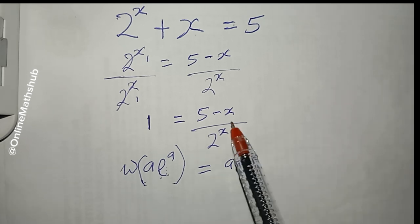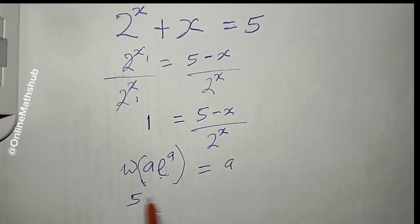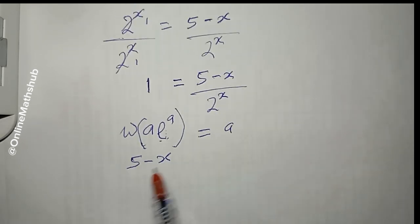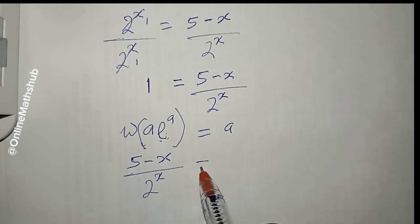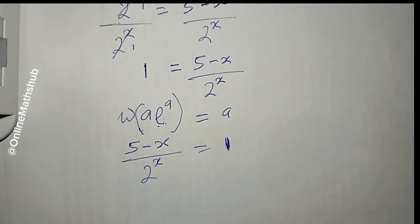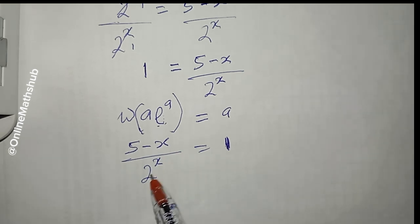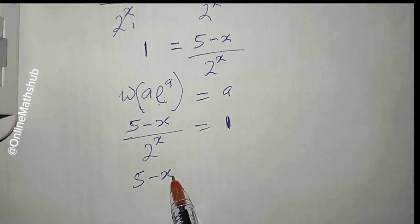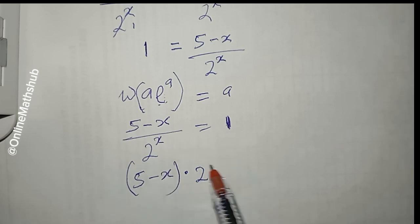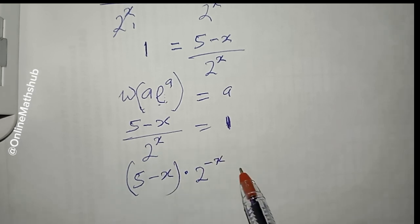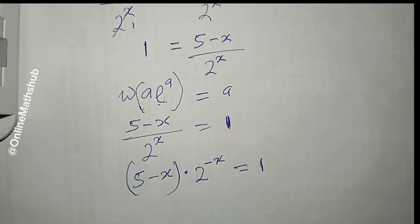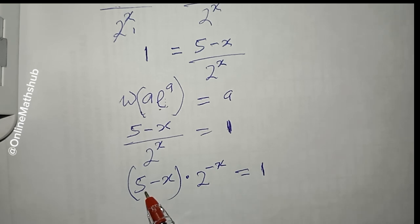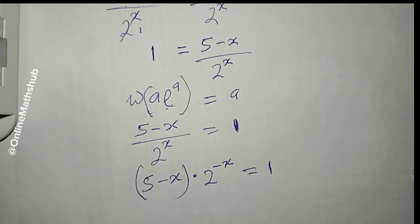For convenience, I'm moving things to get (5 − x) / 2^x = 1. The next thing I want to do is bring 2^x to the numerator, so we have (5 − x) · 2^(−x) = 1. We need to find a way to attach the 5 to the negative x in the exponent.